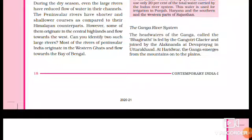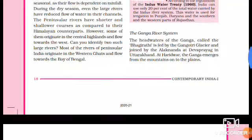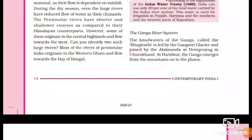The two streams — Bhagirathi and Alaknanda — come together, and when these two streams join, it is called Ganga, and that place is called Dev Prayag.